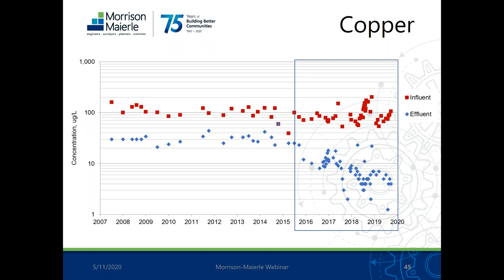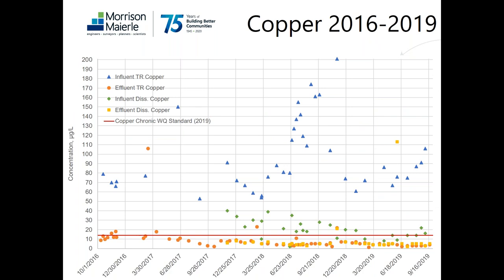Here's a closer look at copper. Influent is pretty much level, but effluent clearly shows a drop with the new process, starting in 2016 when the first two process trains were taken into service at that higher mixed liquor concentration. This closer view shows dissolved and total recoverable copper — blue and green are influent. The process reduces both dissolved and total recoverable copper to below the water quality standards. The chronic standard shown here is 14 micrograms per liter, and the acute would be even higher at 22.